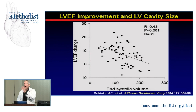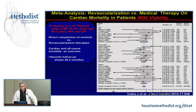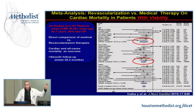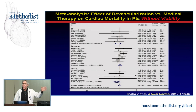A meta-analysis looking at both PET, stress echo, and SPECT showed that in patients with viability — whether identified by PET, echo, or SPECT — revascularization led to better outcomes than medical therapy. Conversely, in patients without viability using any of these three techniques, there was no change in outcome. This demonstrates that by identifying viable tissue, irrespective of technique, you benefit your patients.